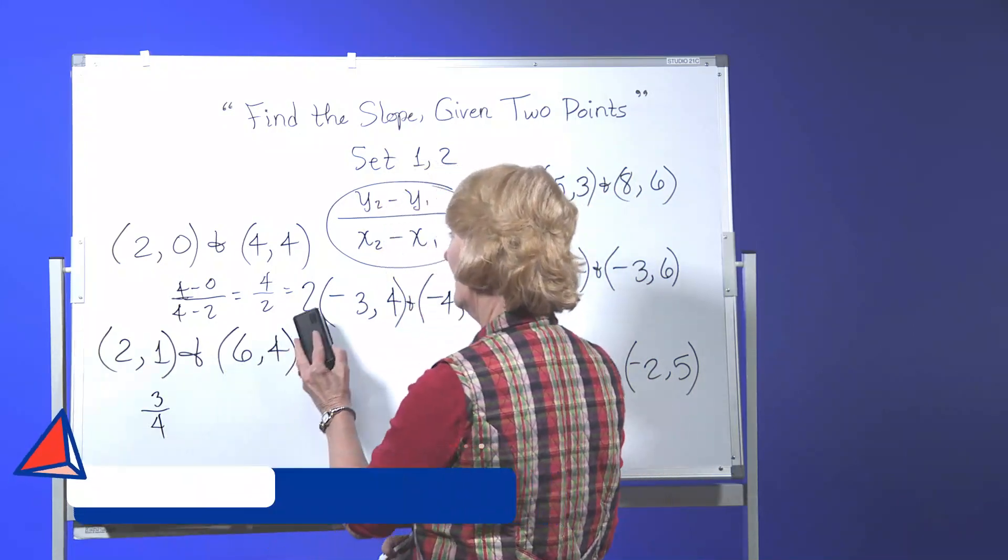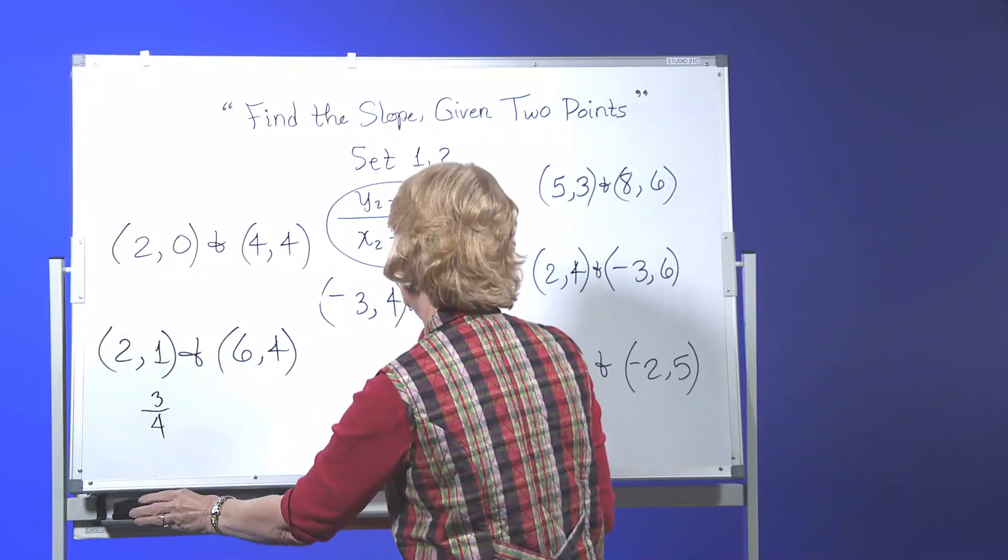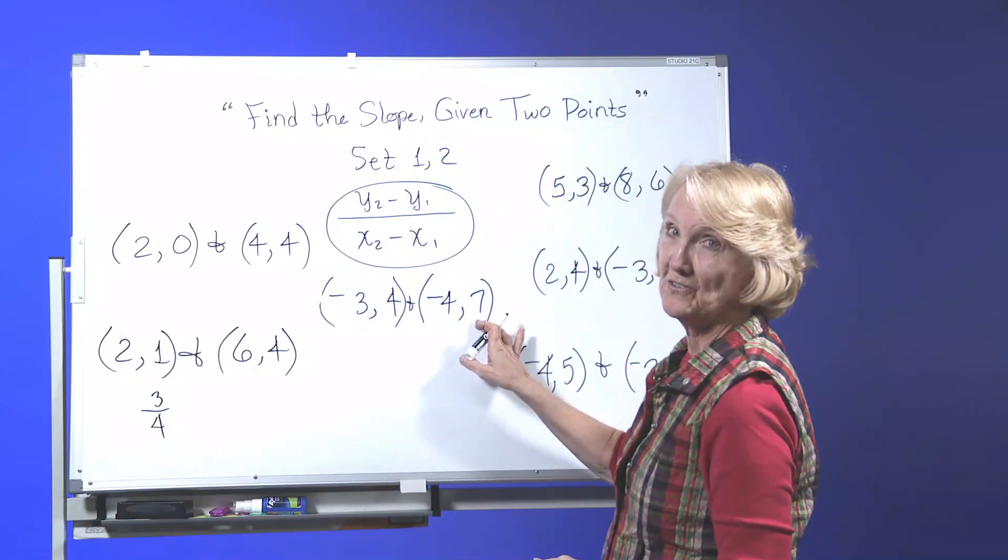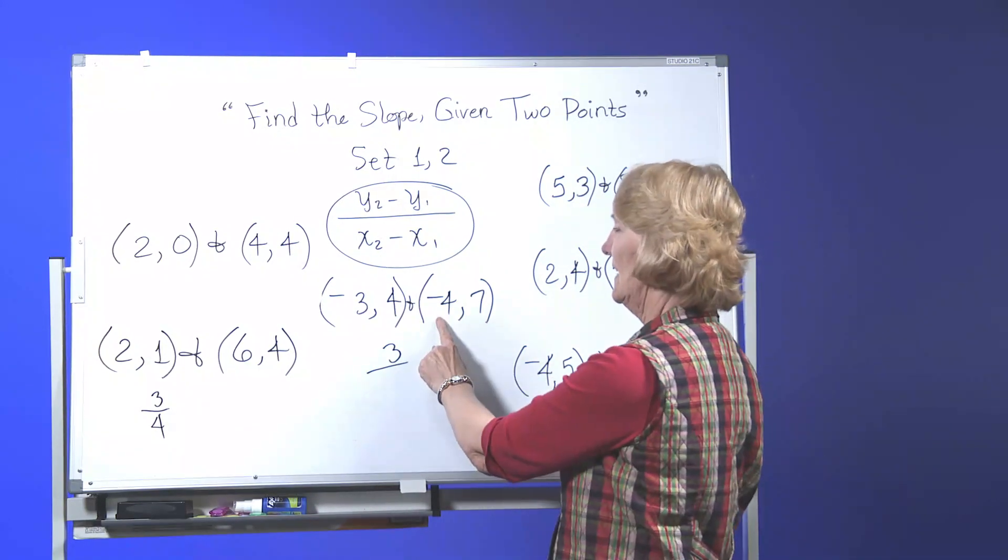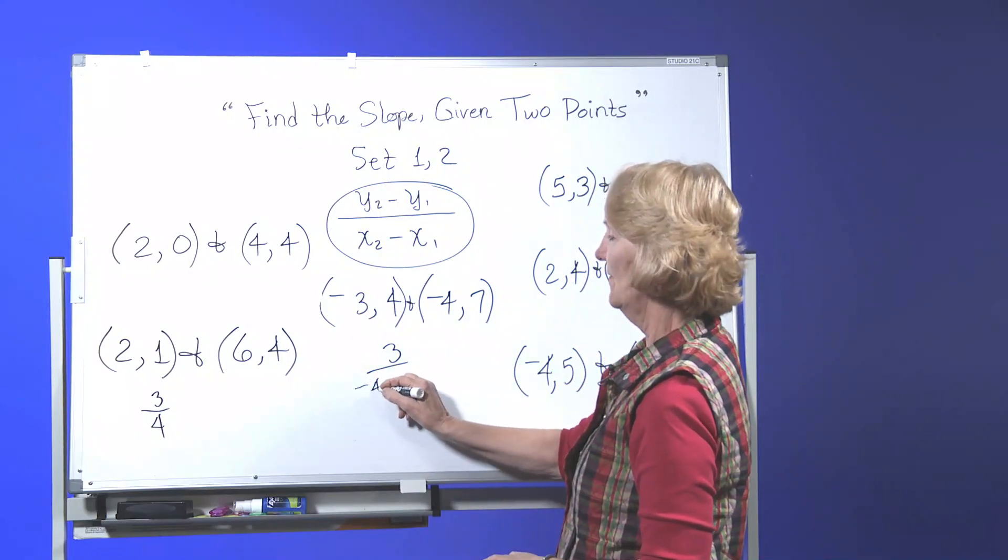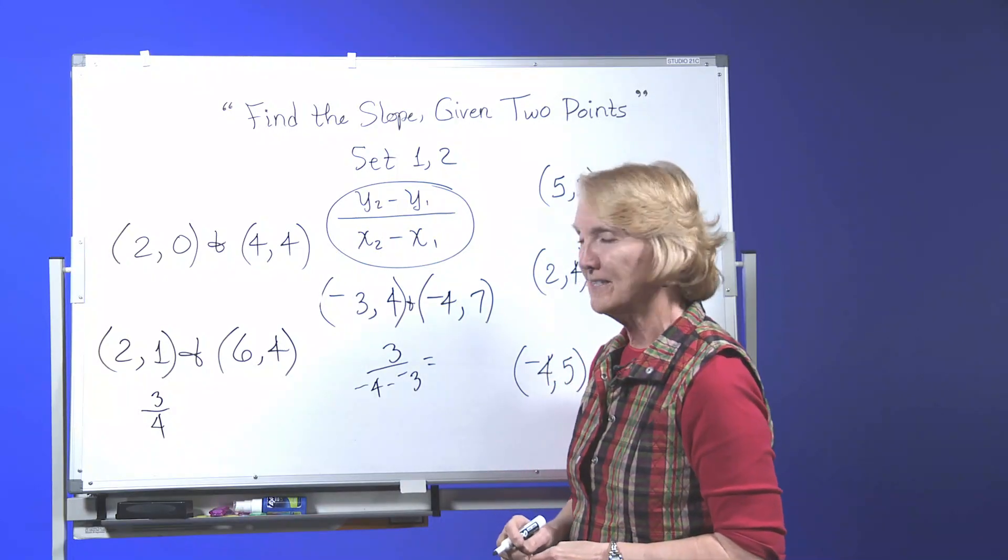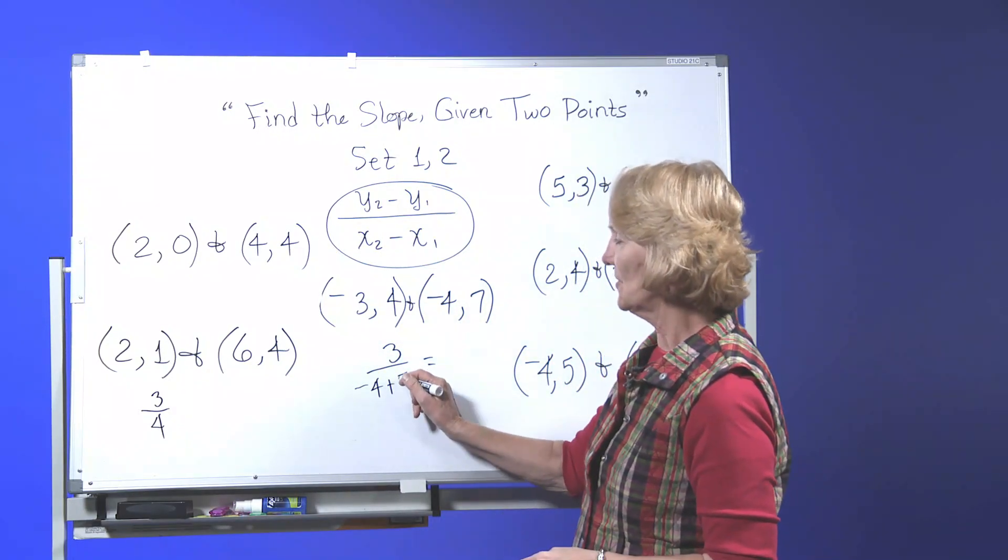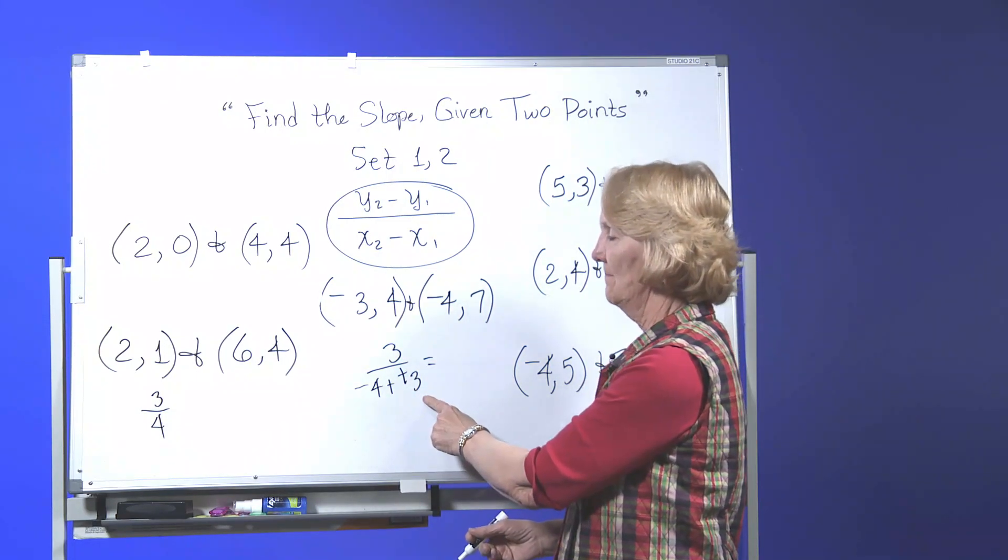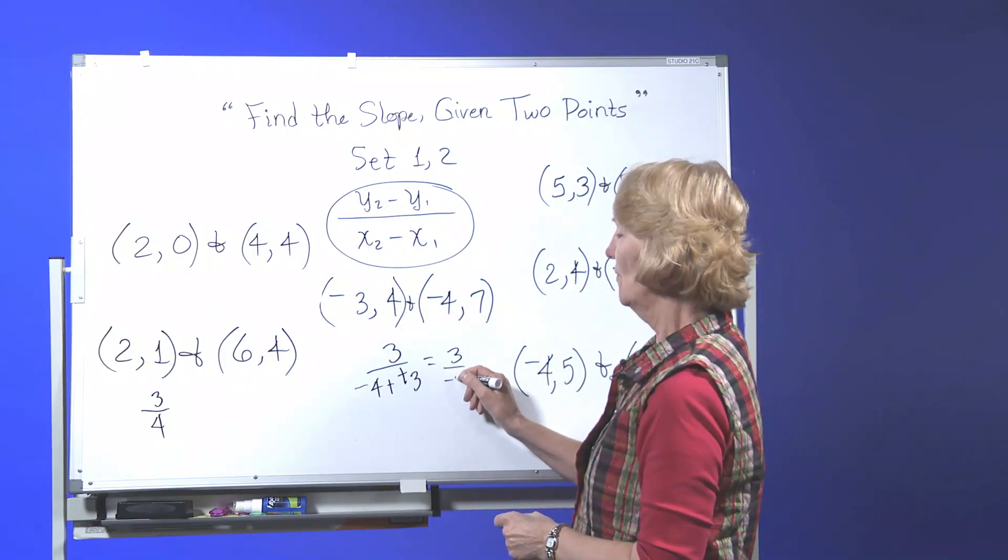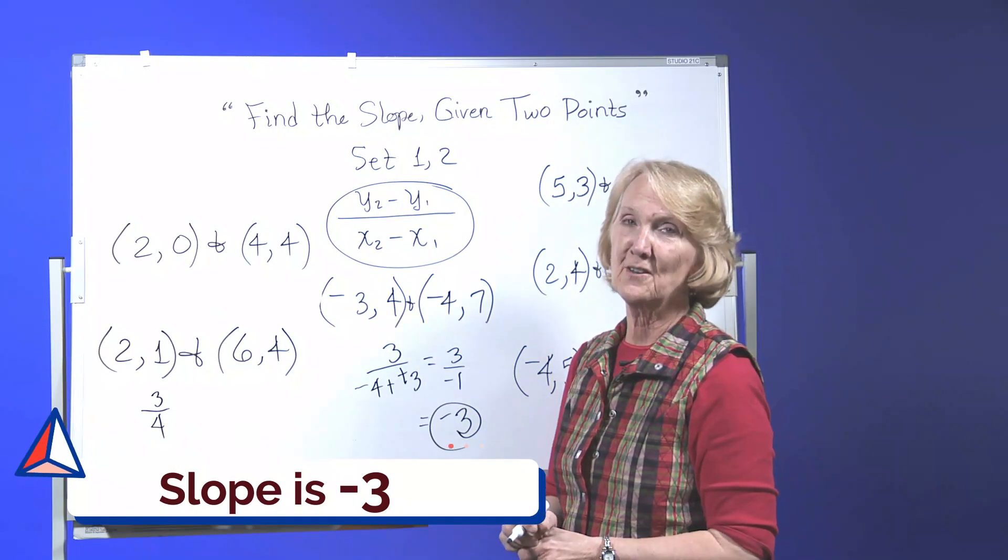Now I'm going to go ahead and get this out of the way. Now negative 3, 4 and a negative 4, 7. Your second y minus your first one. Your second x minus your first one. Negative 4 minus negative 3. Subtraction of a negative is just like adding a positive. Now negative 4 and a positive 3 is negative 1. 3 over negative 1 is the same as negative 3. So your slope is negative 3.